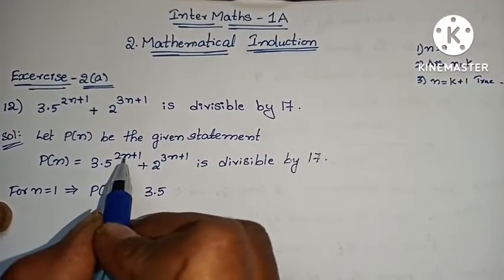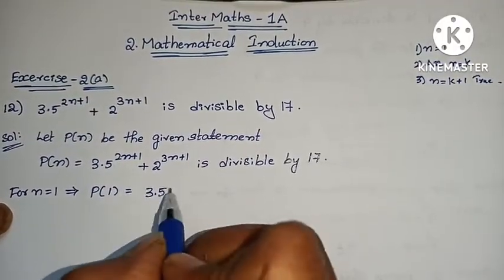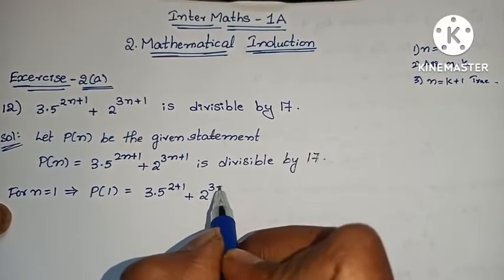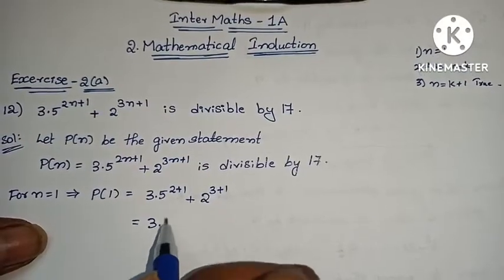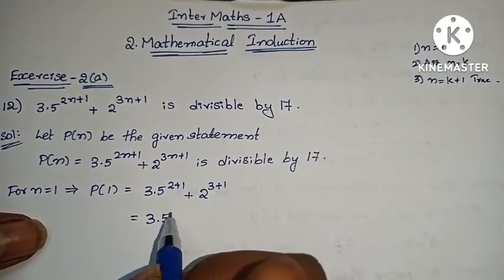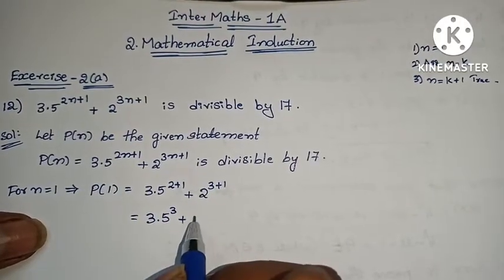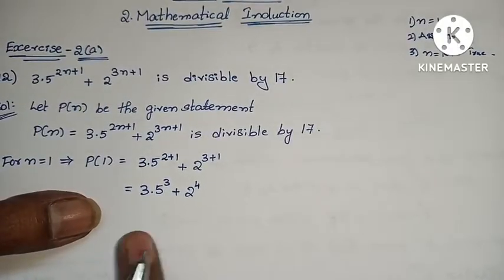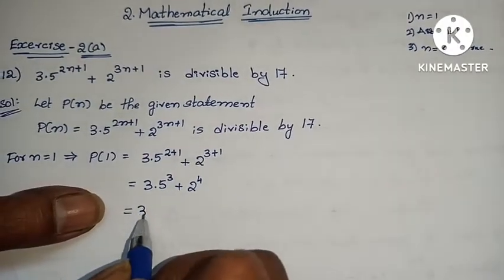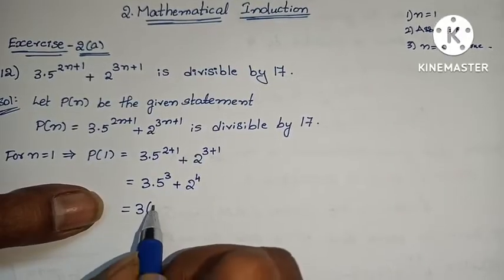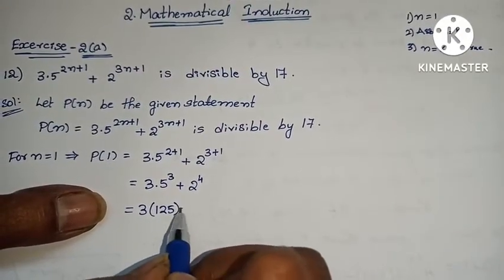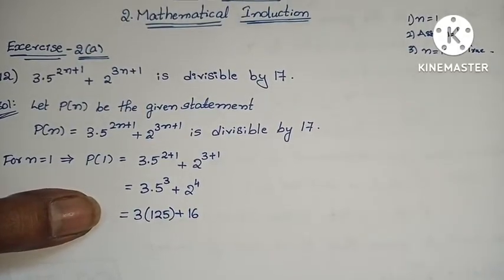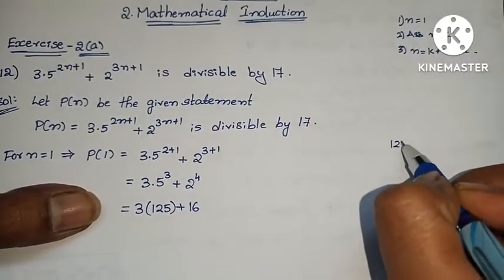3 into 5 power — substituting n=1 — 2 ones are 2, plus 1, plus 2 power 3 ones are 3, plus 1. That gives 3 into 5 power 3 plus 2 power 4. First multiply: 5 cubed is 125, 2 to the 4th is 16. So 125 into 3 equals 375, plus 16 equals 391.